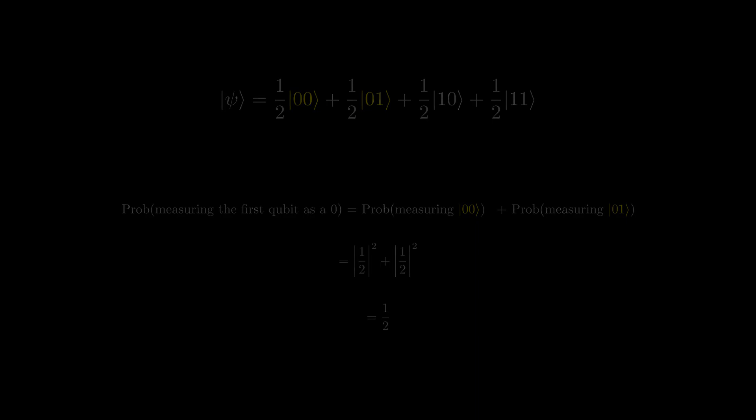But how do we know what the state collapses to once we measure a qubit? Remember, once we measure a qubit, it collapses its superposition and becomes the measurement. Let's look at an example.